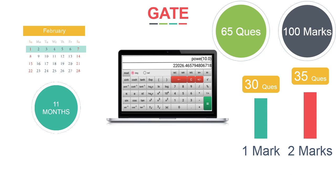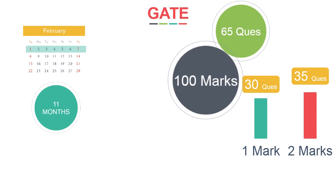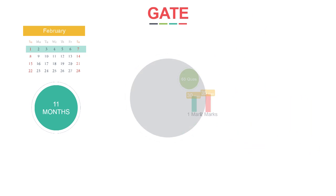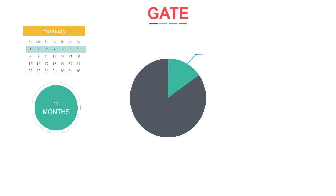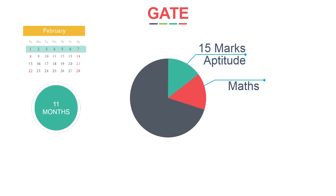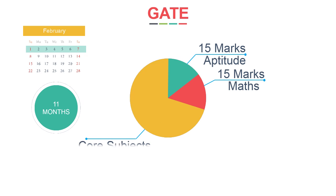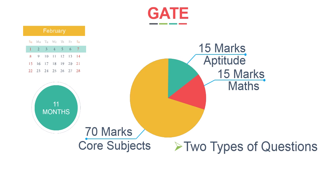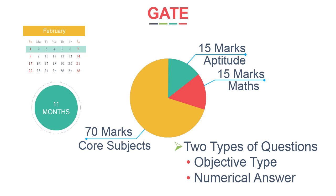The total marks are 100, approximately distributed as 15 marks from General Aptitude, 15 marks from Engineering Mathematics, and the remaining 70 marks from core subjects. There will be two types of questions: objective type and numerical answer questions.